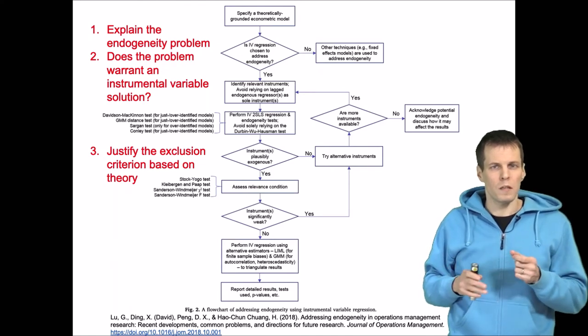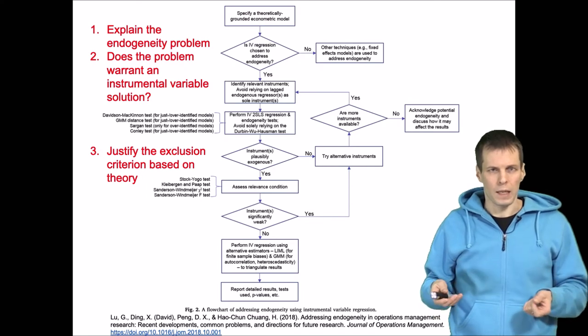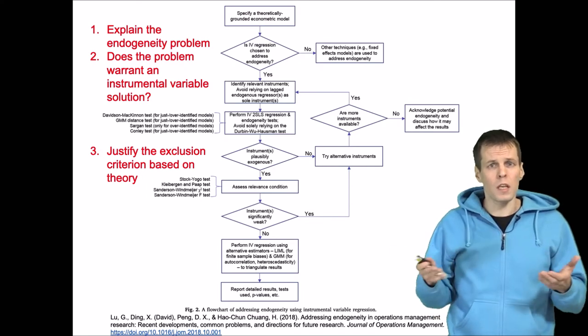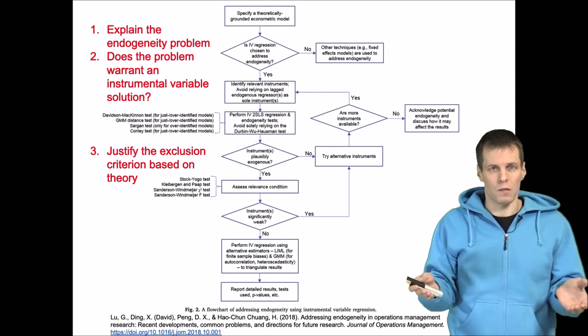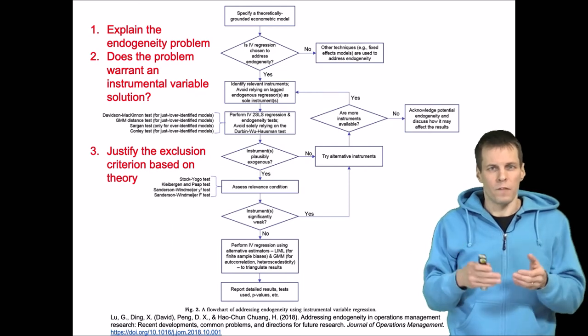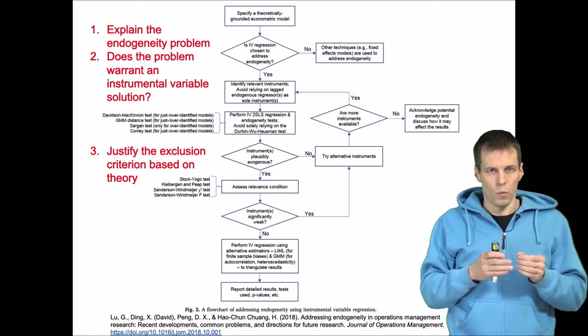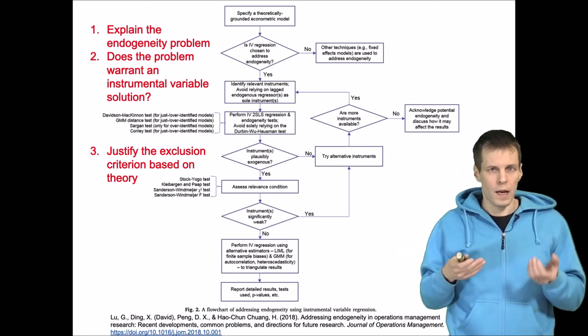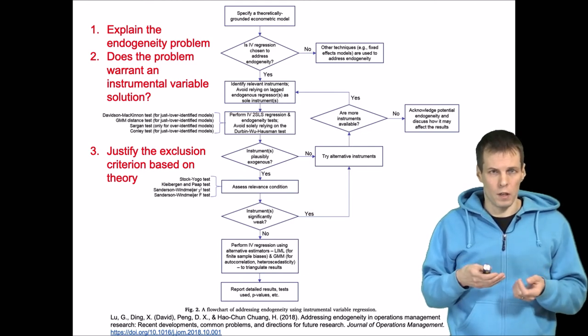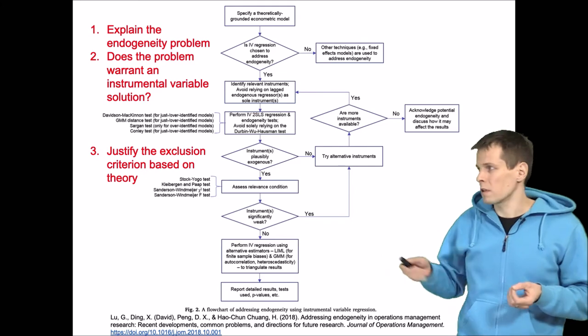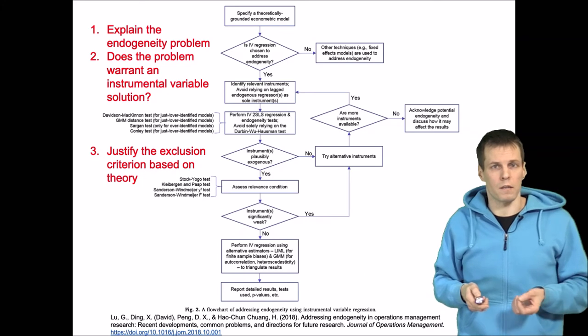This is something that is fundamentally untestable empirically, so it has to be argued based on theory. So the first thing when you start writing about instrumental variables is not how you apply two-stage least squares to your data. Instead, you need to justify why you think that the instruments don't correlate with the unobserved causes of the dependent variable. And that can be hard to do. If you don't understand the phenomena that you're studying well, it is nearly impossible to do. So this is very much a theoretical exercise instead of an empirical exercise.